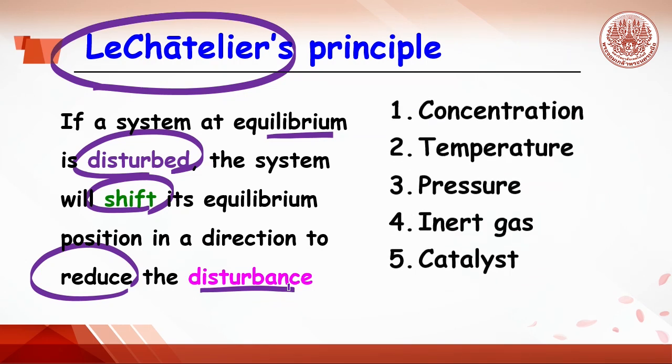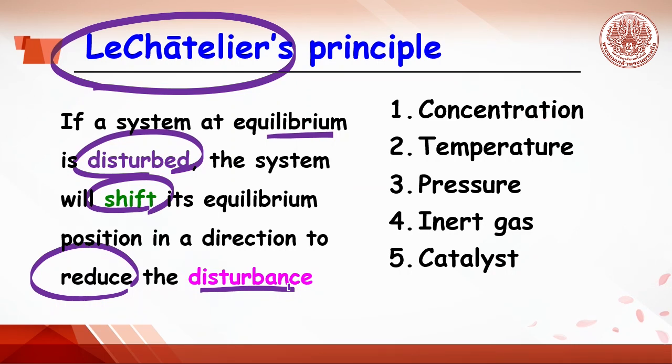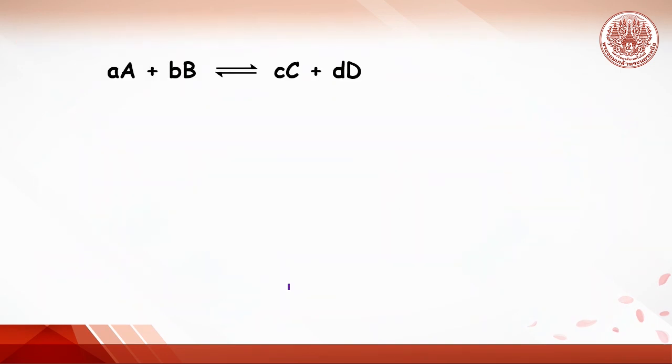In the experiment today, students will understand two effects - concentration and temperature - on shifting the equilibrium. In this reaction, if the concentration of the reactant increases, the system tries to reduce the concentration by shifting the direction to the right, so products concentration increases. On the other hand, if the concentration of product increases, the reaction will shift to the left.